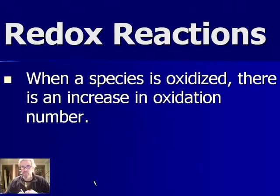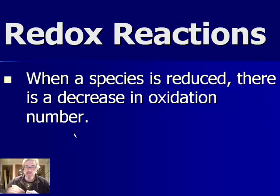Well it's not always so easy to spot electrons being lost or gained. And so we have another way of telling. When a species is oxidized, there's an increase in oxidation number. Remember we learned earlier how to assign oxidation numbers. This is why. So we can spot oxidations and reductions. Because when a species is reduced, you're going to see a decrease in oxidation number.